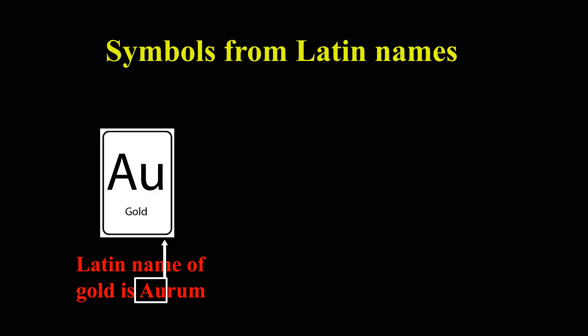Not only English names, but for some elements, their Latin names are used in deriving the symbol. For example, Latin name of gold is Aurum. Its symbol is formed by taking first two letters from this name. The symbol for gold is Au.